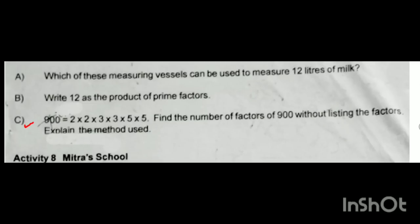Next question: 900 = 2 × 2 × 3 × 3 × 5 × 5. Find the number of factors of 900 without listing all the factors, and explain the method used. This is based on the product of prime numbers.